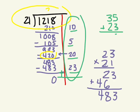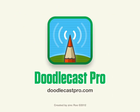Good. And now we're going to do 35 plus 23. Let's do it here. 5 plus 3? 8. 3 plus 2? 5. So 58. The answer is 1,218 divided by 21 is 58. And that's Hangman Division. Made with DoodleCast Pro.